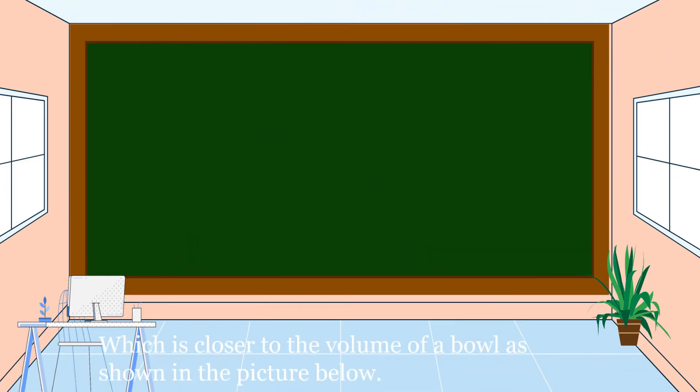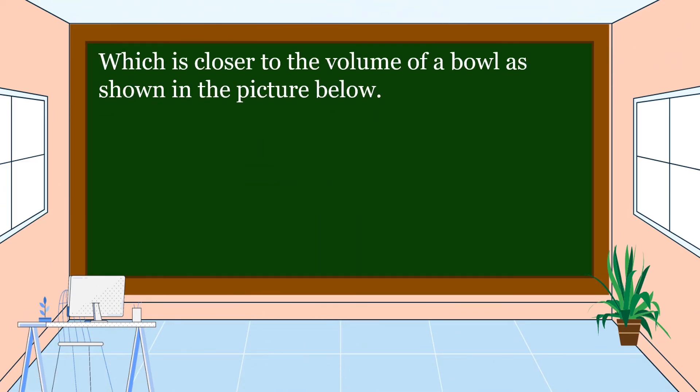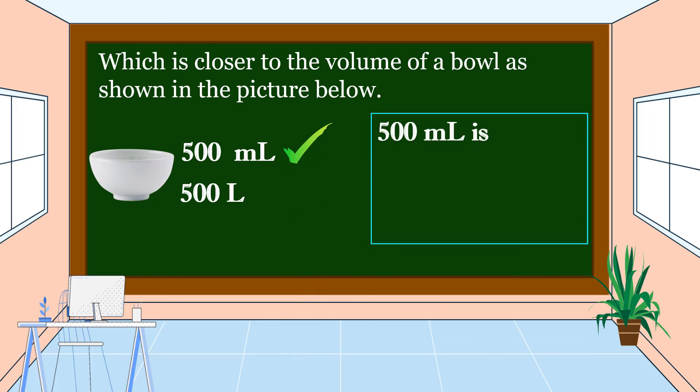Next example. Which is closer to the volume of a bowl as shown in the picture below? Is it 500 milliliters or 500 liters? What is your answer? Fantastic! The correct answer is 500 milliliters. 500 milliliters is less than 1 liter, so it can fill in this bowl.